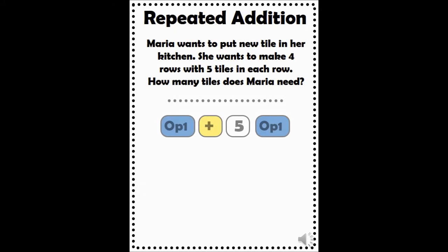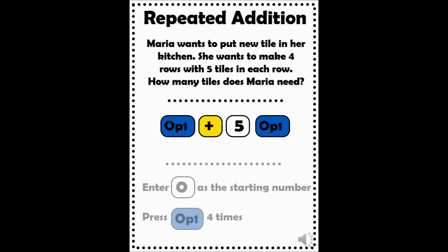To program your calculator, press OP1 plus 5. Then press OP1 again to save this. Now any time we press OP1, the calculator will add 5. To solve this problem, we want to skip count by 5 or repeatedly add 5 four times. We will start at 0, then press OP1 four times to skip count by 5 four times.